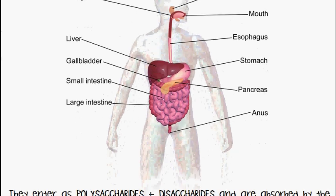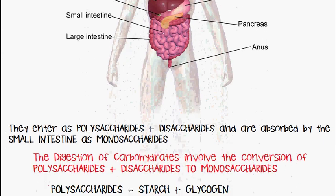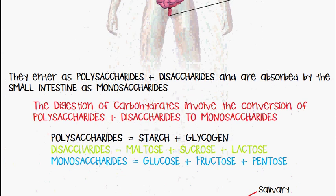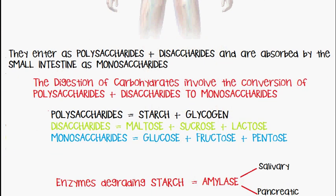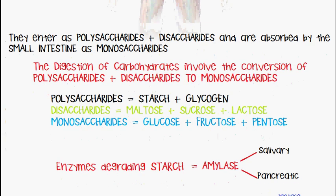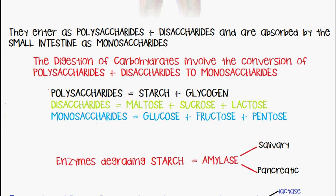In this video we'll be discussing the digestion of carbohydrates, and in the following video we'll discuss absorption. Carbohydrates enter as polysaccharides and disaccharides and are absorbed in the small intestine as monosaccharides. Examples of polysaccharides are starch and glycogen; disaccharides are maltose, sucrose and lactose; and monosaccharides are glucose, fructose and pentose.